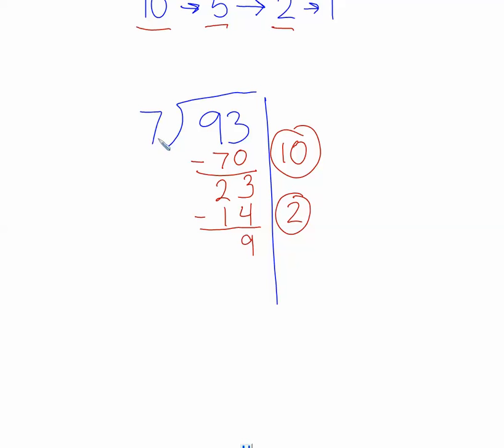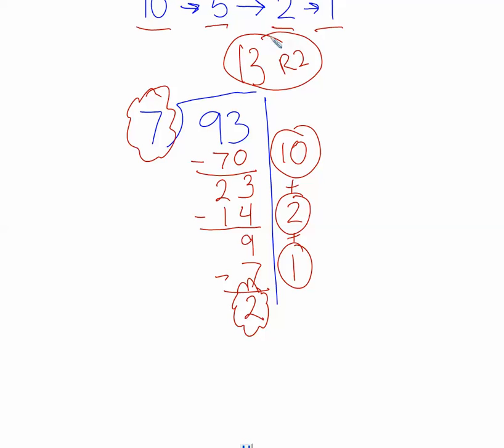Now, can I make any more groups of 7 if I have 9 still? And the answer is yes. I can still make one more group of 7. So if I add one more group of 7, 7 times 1 equals 7. I subtract that. 9 minus 7 is 2. And so this is my remainder. I have a remainder of 2, but my groups, I have 10 plus 2 is 12, plus one more is 13. So I have 13 groups of 7 with a remainder of 2.